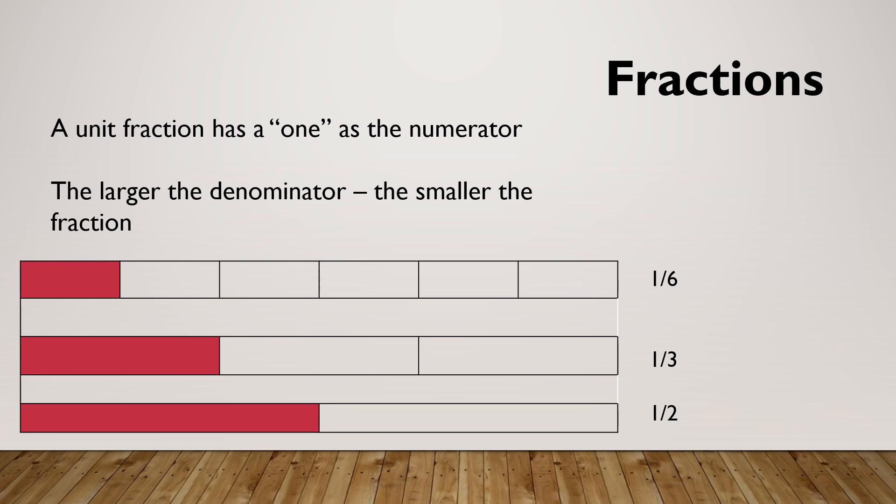As I say, a unit fraction has a one as the numerator. In cases of unit fractions, the larger the denominator, the smaller the actual fraction. So as represented by these, I've got a sixth, something split into six pieces and I've got one. I've got a third split into three and I've got one. And I've got a half split into two and I've got one. So when we see unit fractions, the bigger the number on the bottom, the smaller the fraction actually is.